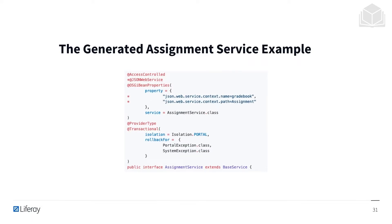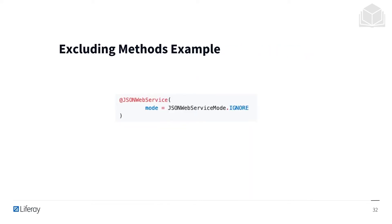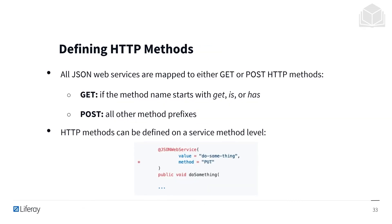Here is the automatically generated code from the assignment service. A method can be prevented from being exposed as a web service by setting the mode attribute to JSONWebServiceMode.IGNORE in the remote service implementation class. All JSON web services are mapped to either GET or POST HTTP methods — GET if the method name starts with get, is, or has, and POST for all other method prefixes.